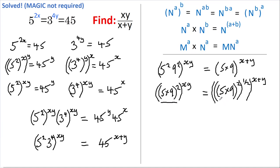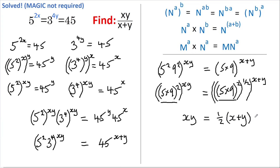And if the bases are the same, then the powers must be the same. So on the left-hand side we have xy, and on the right-hand side we have a half of x plus y. Remember that when we have a power raised to a power, that's the same as those powers multiplied together, so we can apply that here.